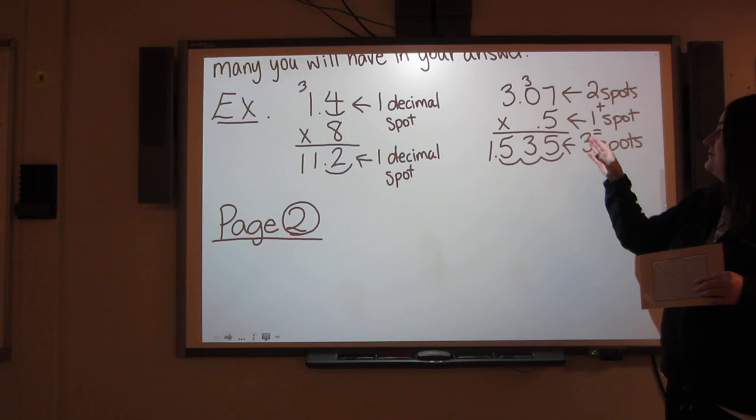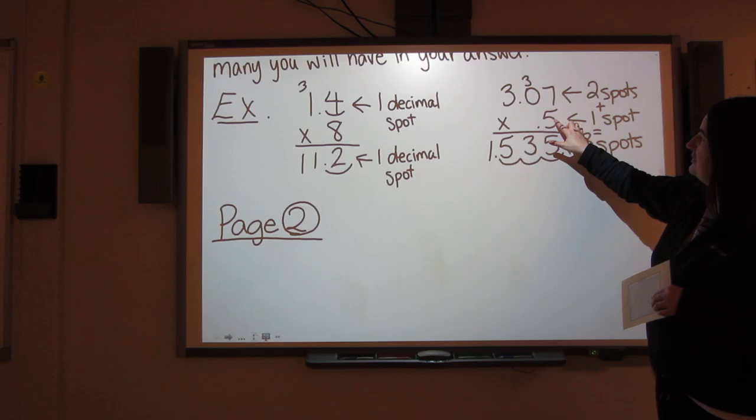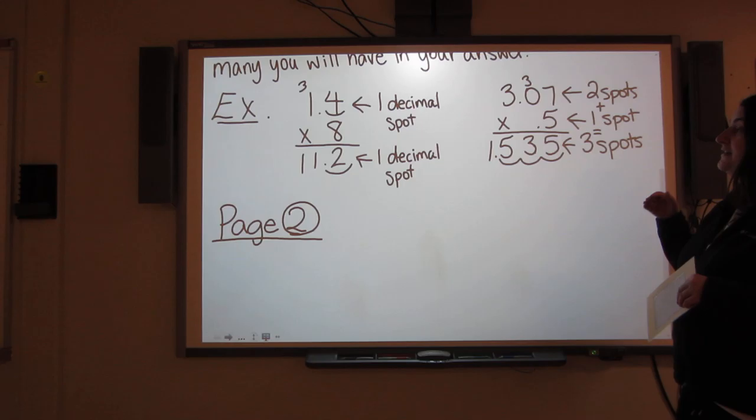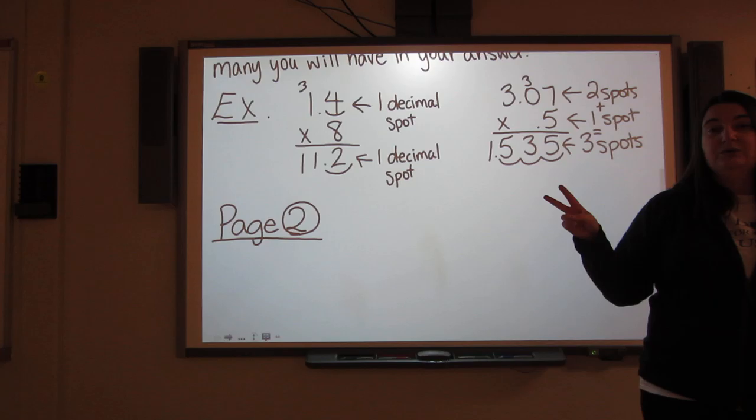In this example here, I have two decimal spots in the first factor and I have one decimal spot in the second. You need to take into account both of them, both of the decimal spots in the factors. You have to combine them together. In this case, two plus one equals three. I've got one, two, three digits after the decimal. So I'm going to have one, two, three digits after the decimal in my answer.